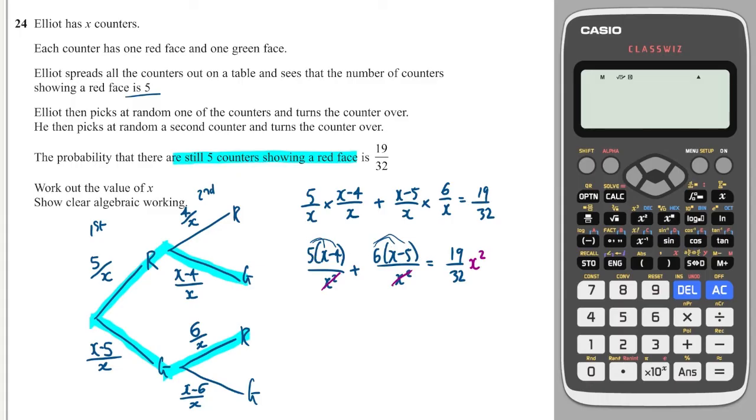And I have minus 20 and minus 30, which is minus 50. And that's equal to 19 over 32X squared.